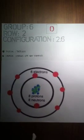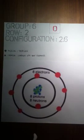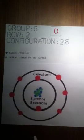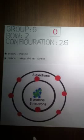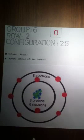First of all, oxygen is in group 6, row 2, and its configuration is 2.6. Some physical properties about oxygen is that it's colorless, odorless, and tasteless. Some chemical properties is that it supports combustion and combines with most elements.